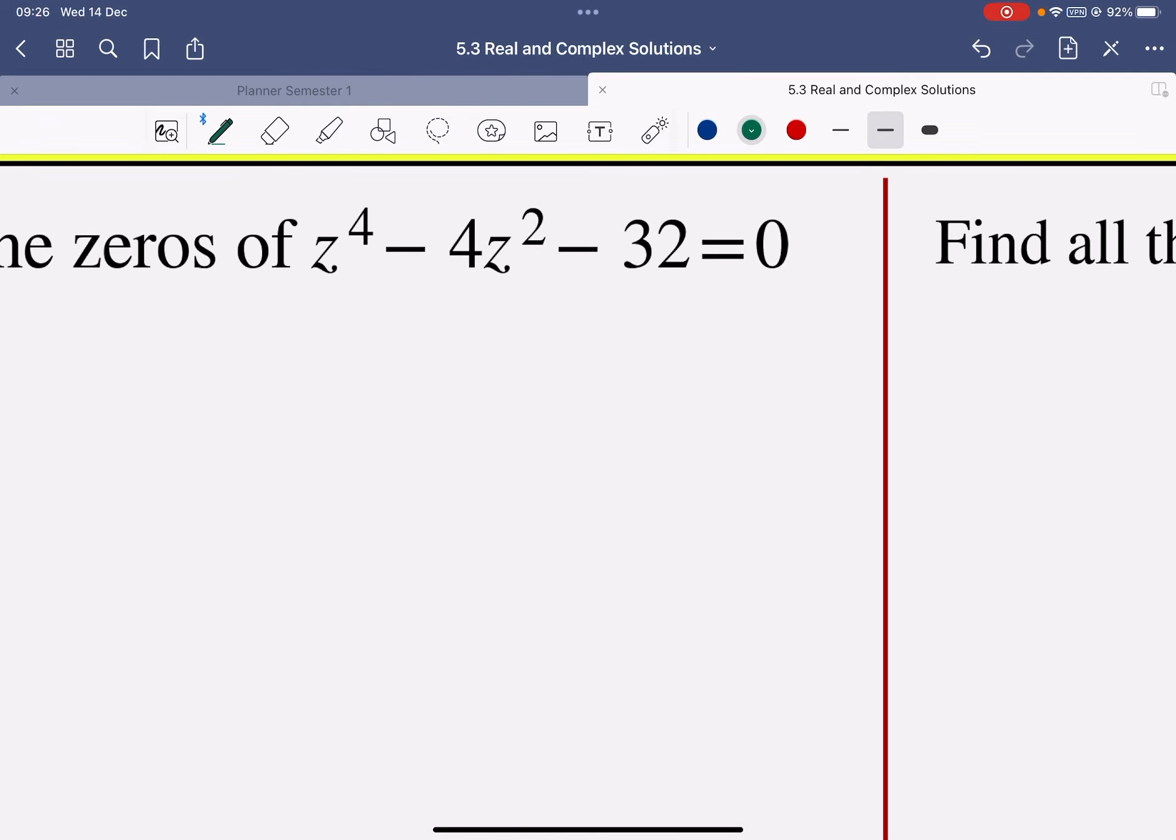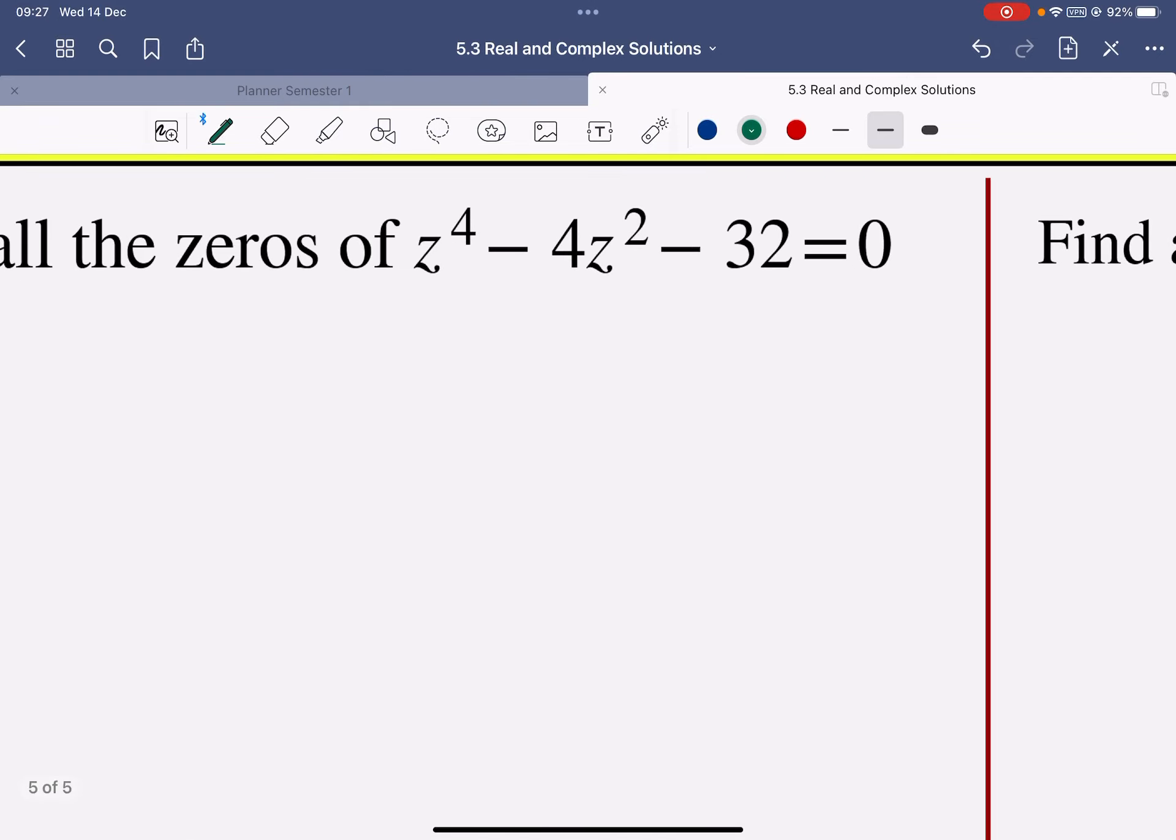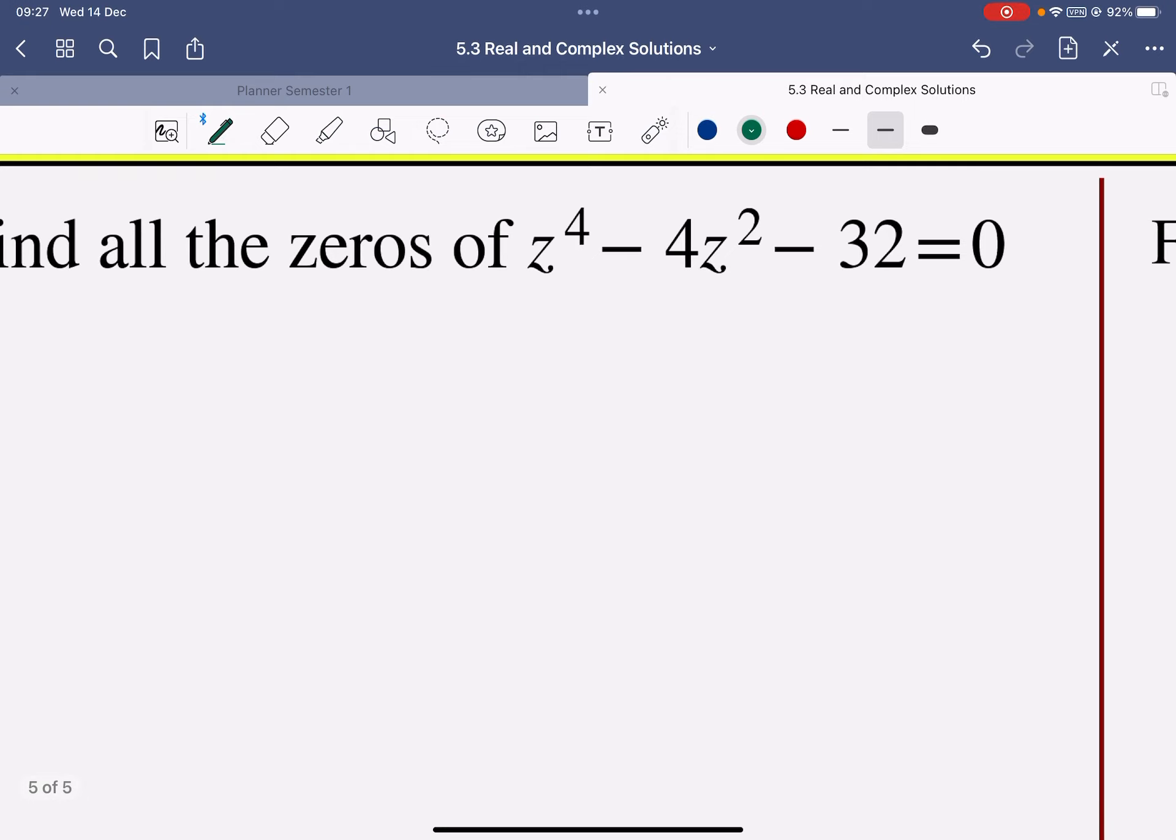So if we look at the first one, what I'm going to do is I'm going to just put this into two brackets. And I'm going to skip a step here. I'm not going to make it x equals z squared. I'm just going to say, well, I can have a z squared in the first bracket.